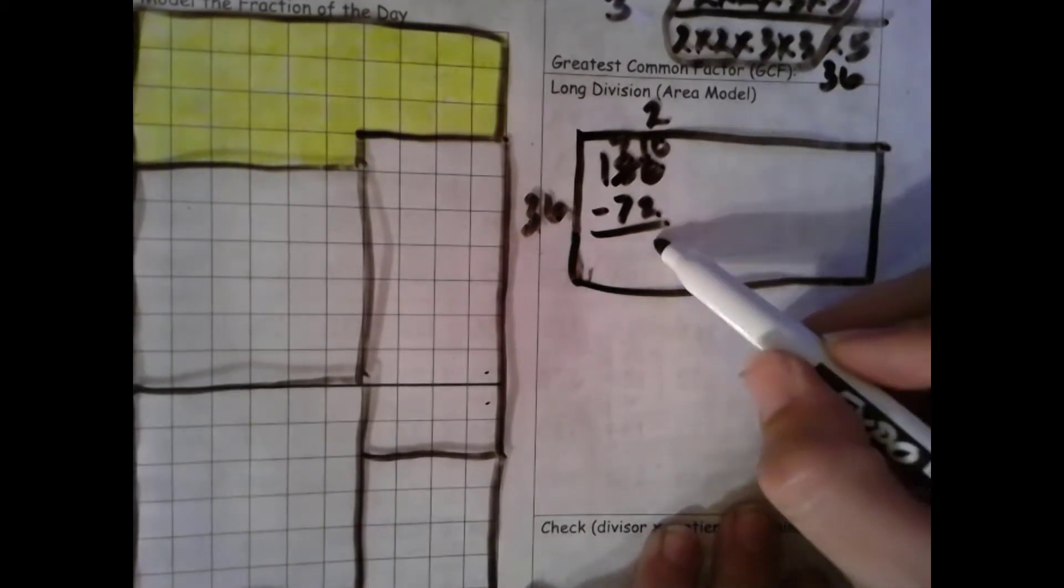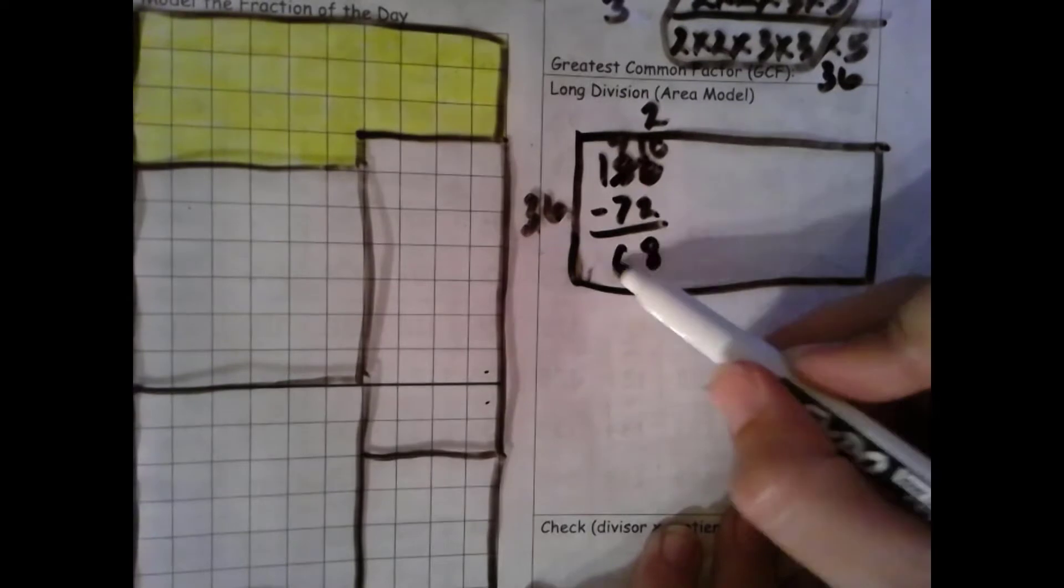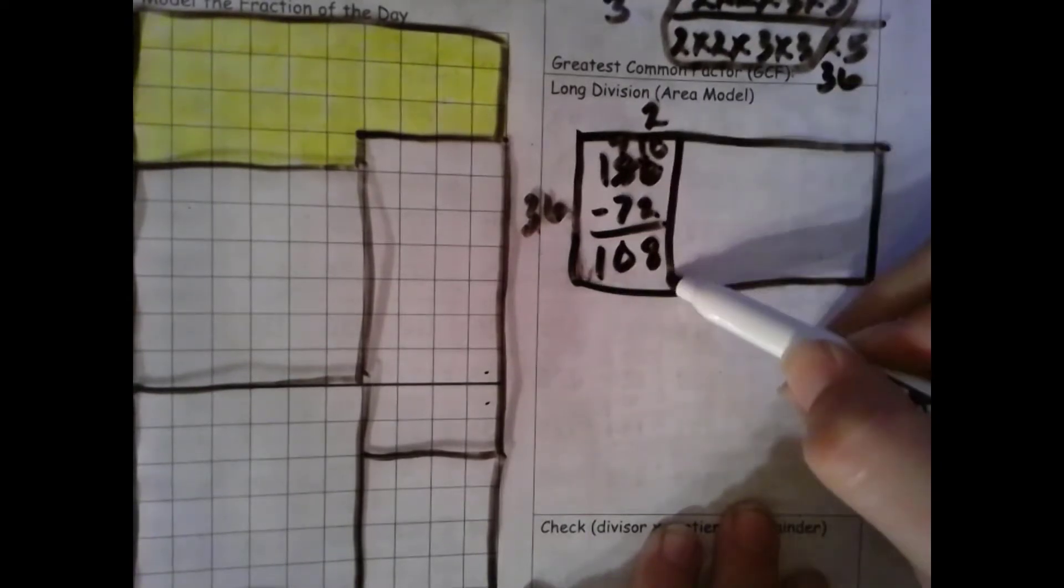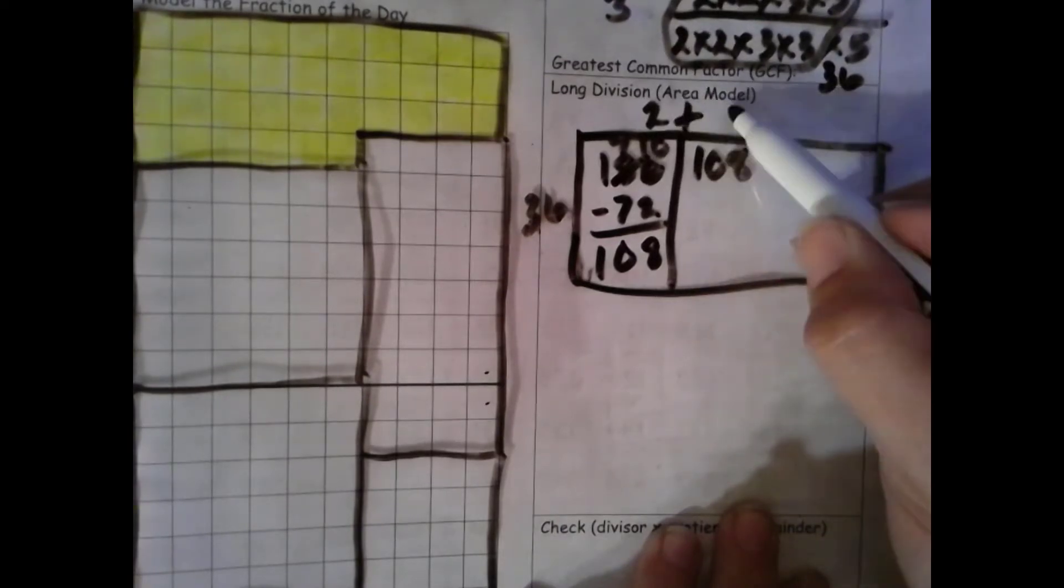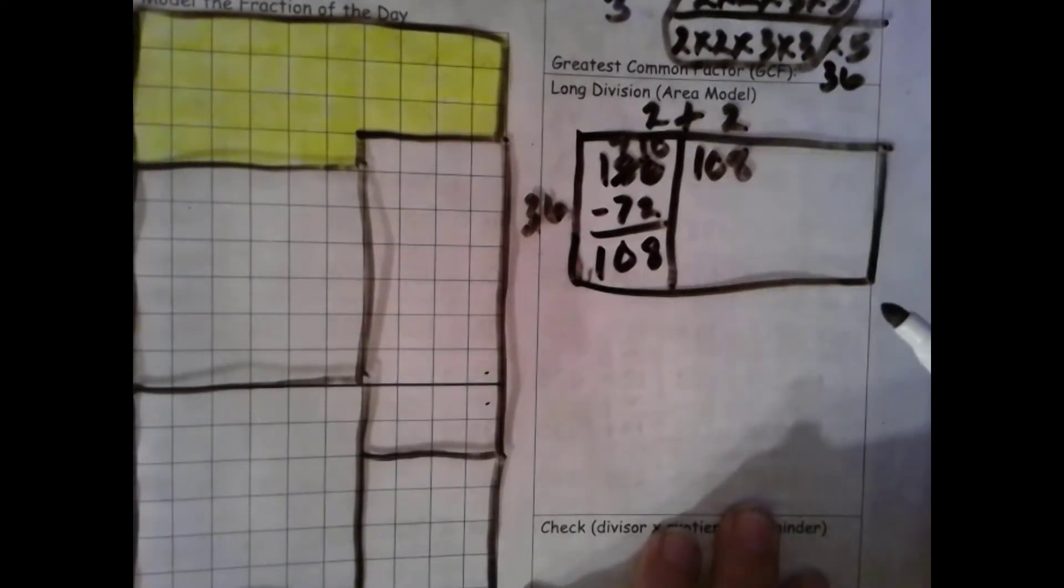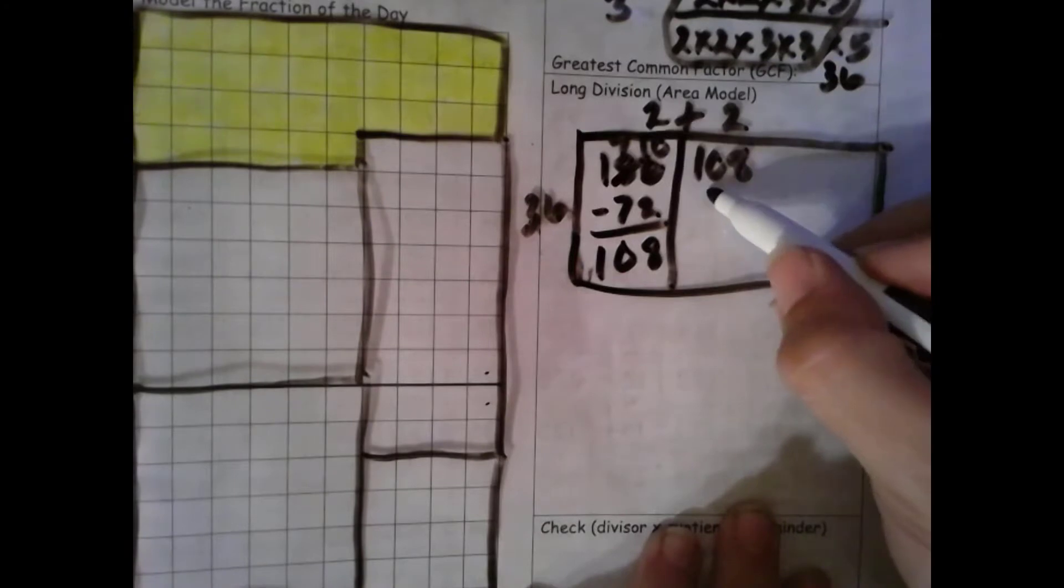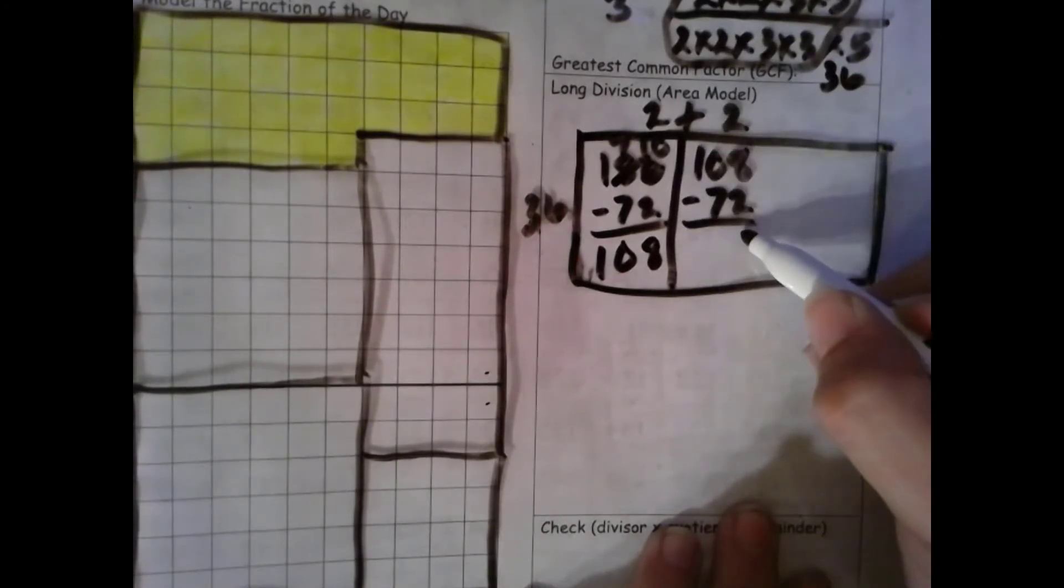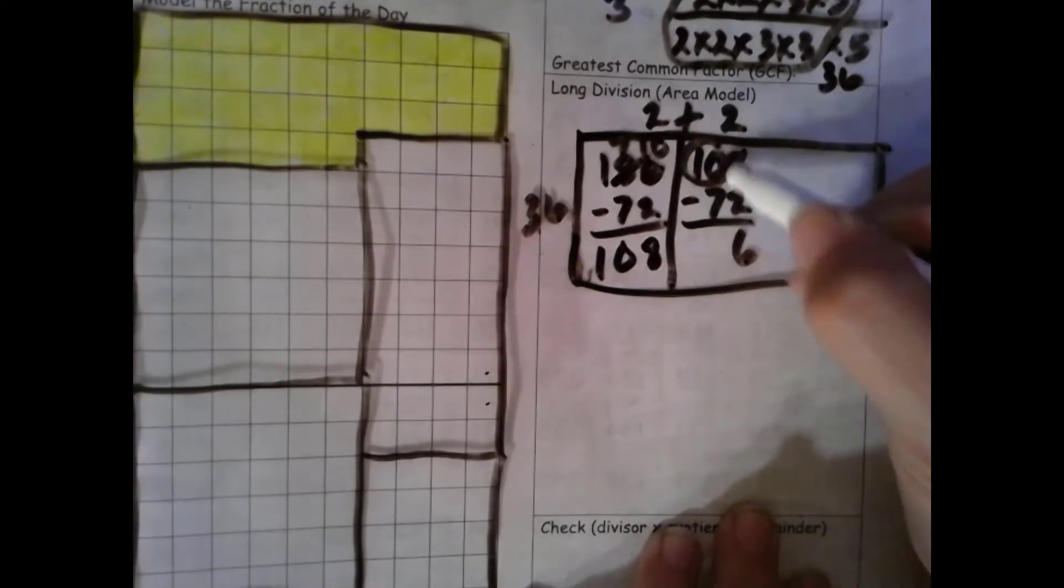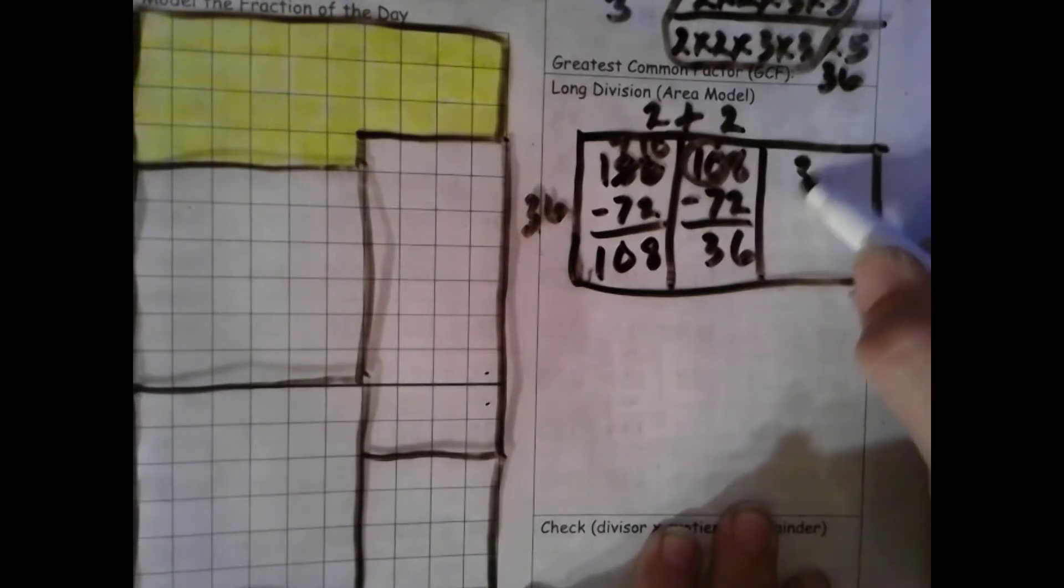10 plus 0 is 10. 10 take away 2 is 8. 7 take away 7 is 0 and 1. Bring that up here. Do another group of 2. 2 times 36 is 72. More on top. No need to stop. And then this is just 10 take away 7, which is 3.